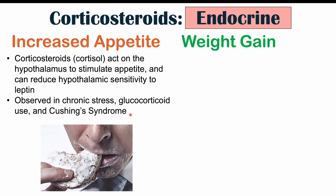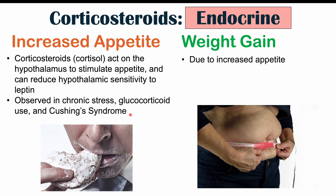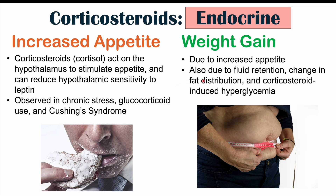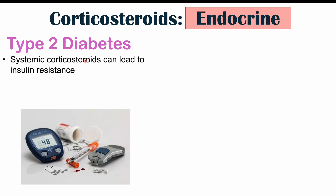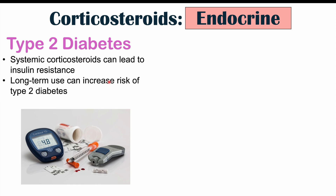We can also see weight gain. Patients on long-term systemic corticosteroids can experience weight gain due to increased appetite, but it can also be related to fluid retention, changes in fat distribution, and corticosteroid-induced hyperglycemia — which means high blood sugar level. This leads us into type 2 diabetes: patients on systemic corticosteroids can have a higher risk of type 2 diabetes and insulin resistance, especially with long-term use and higher doses.